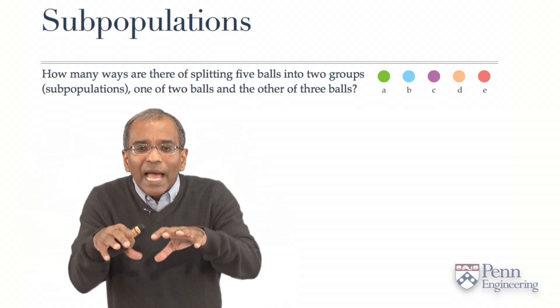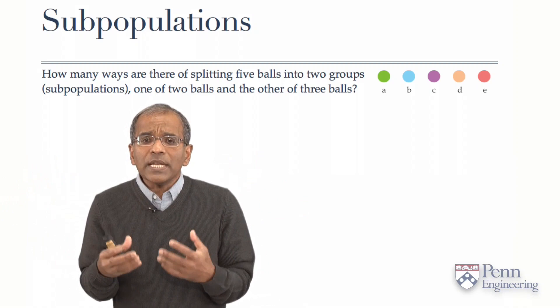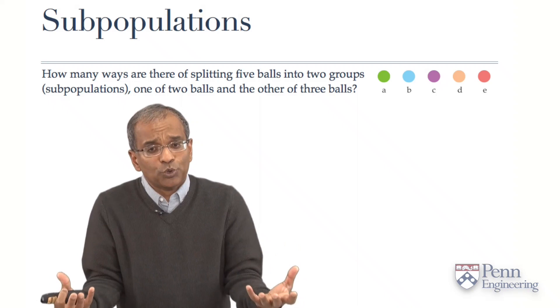As I said, the semantics add color to the problem, but don't add to its logical content. So, I have five balls. How many different ways can we split these five balls, these five objects, into two groups?